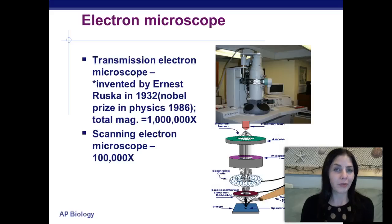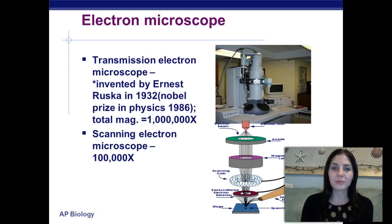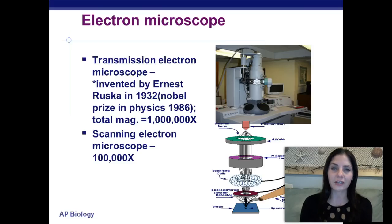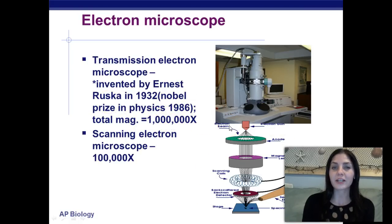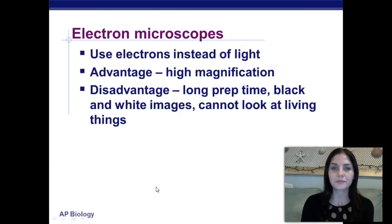This is one of the cool microscopes — it's called an electron microscope. There are two types: a transmission electron microscope and a scanning electron microscope. The transmission electron microscope was invented by Ernest Ruska in 1932, who also won the Nobel Prize for Physics in 1986. The total magnification for this microscope is one million times. The scanning electron microscope can magnify things up to 100,000 times. Electron microscopes use electrons instead of light, and the advantage is that they have a very, very high magnification.